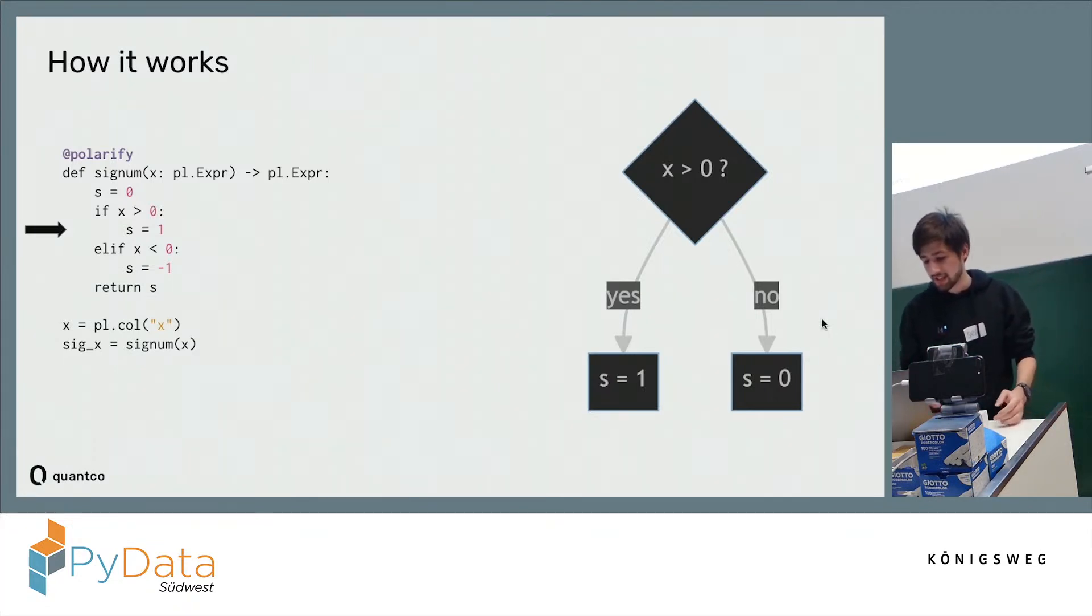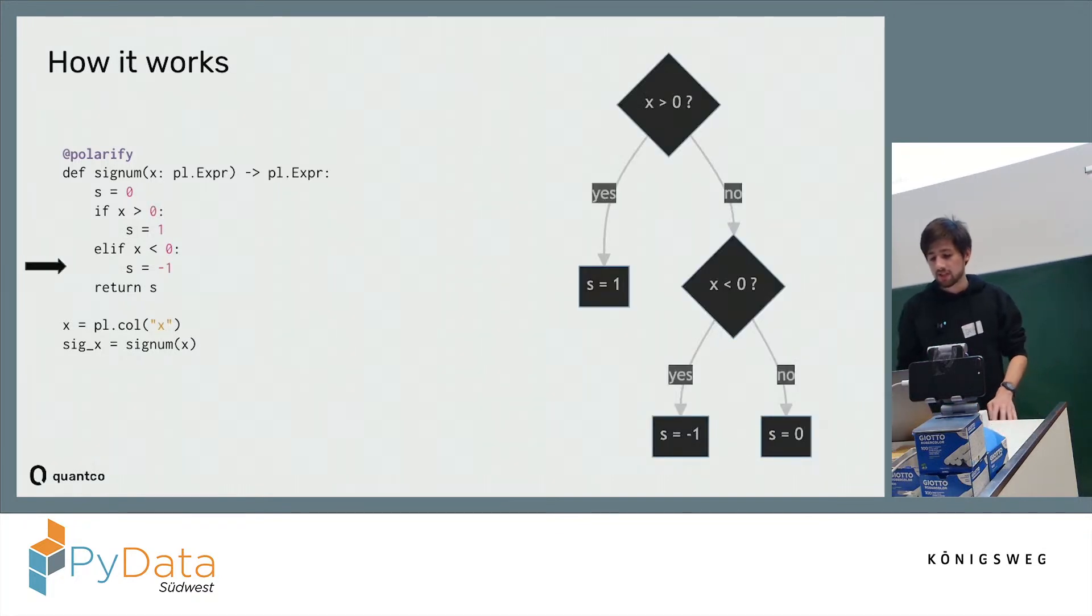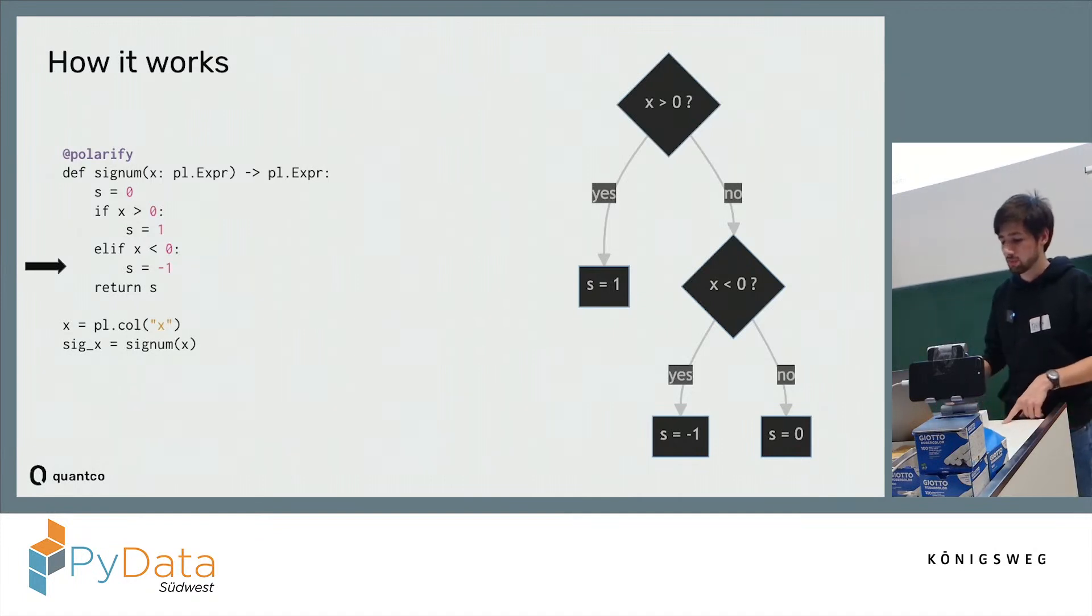We replace this S being equal to 0 statement down here with another conditional block, and now the condition is if X is being smaller than 0, S will be assigned to minus 1, and if not, S will still remain at 0.